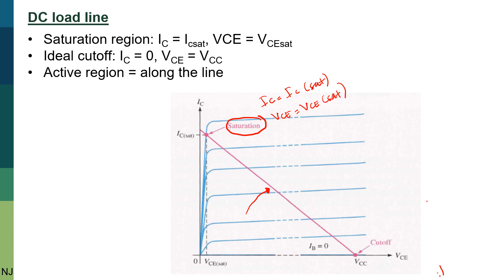Meanwhile, at the bottom of the load line is the ideal cutoff where IC equals zero and VCE equals VCC. Along this load line is the active region or linear region.